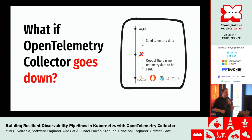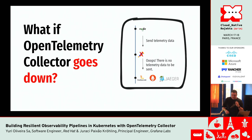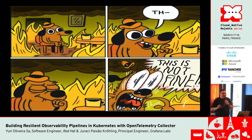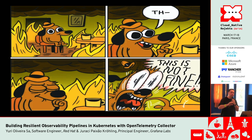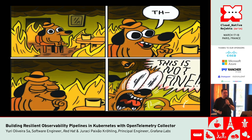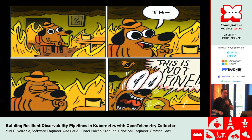In practice, an application generates telemetry data and sends it to a collector. That collector does some processing and sends data to a backend — a logs backend, metrics backend, or tracing backend. What happens when the collector dies, or when the connection between collectors and backends is gone? For some situations it may be fine to lose data temporarily, for example if a collector can restart very quickly. But for most people it's not fine, and that's what we'll cover next.